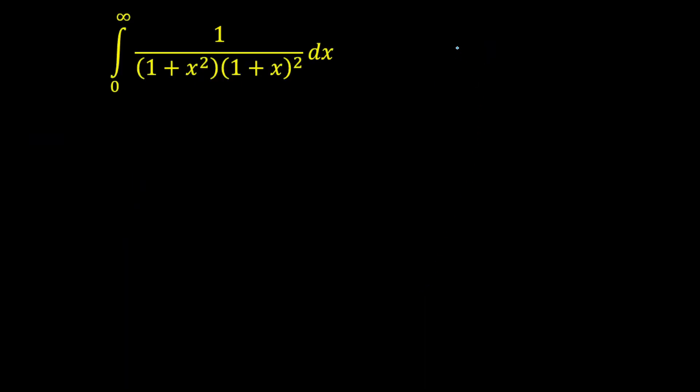So for this kind of question there are two methods. The first is you are going to take x as tan theta here. The reason being because 1 plus x square is present, the moment you put x equals tan theta it will give you secant square and the differential of tan theta will be secant square. So it will be easy.